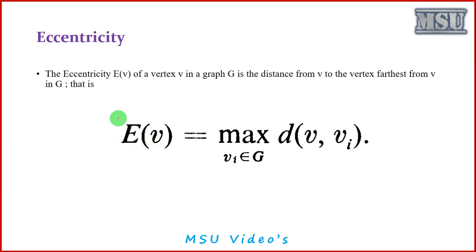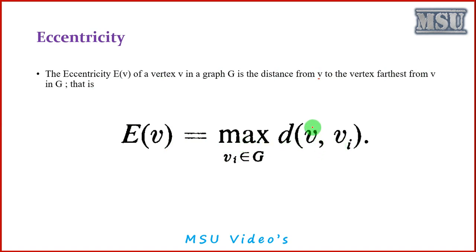Another important property of a graph or tree is the eccentricity value. Metric and distance are defined with respect to pairs of vertices. Now eccentricity is a value defined for a single vertex. The eccentricity E(V) of a vertex V in a graph is defined as the maximum distance from V to the farthest vertex in G. We calculate the distance from vertex V to all other vertices and identify the maximum value — that is the eccentricity.